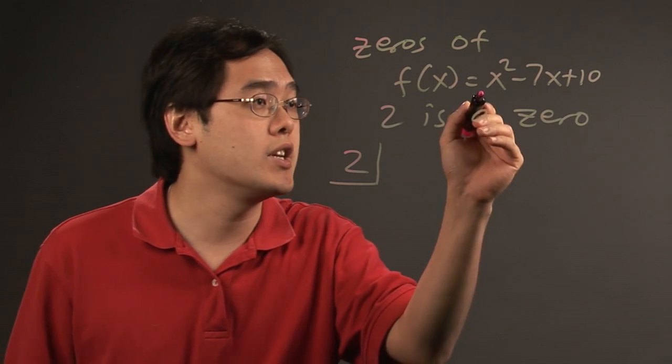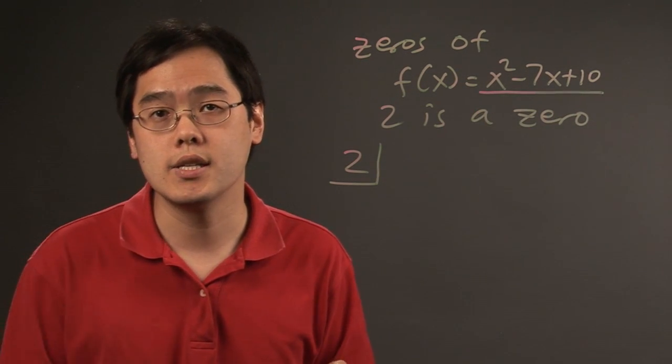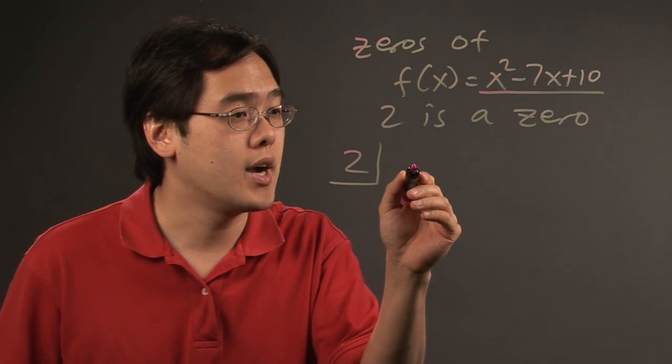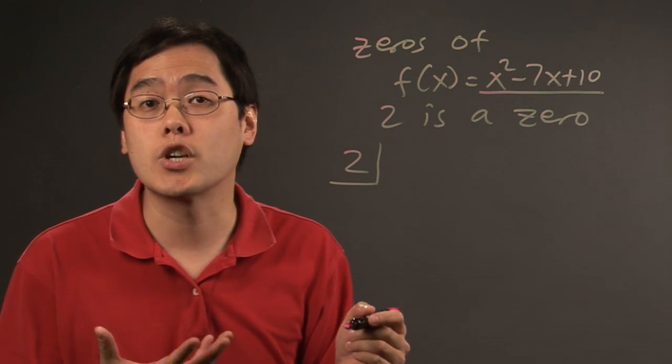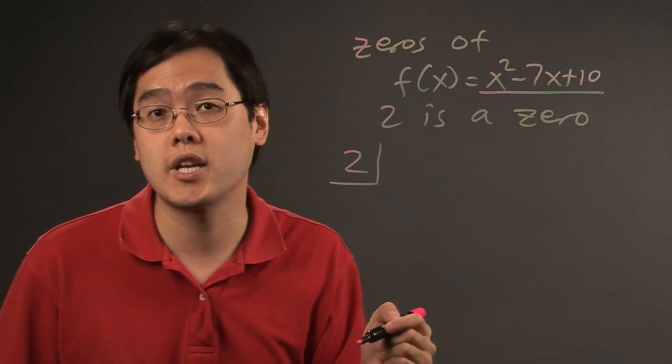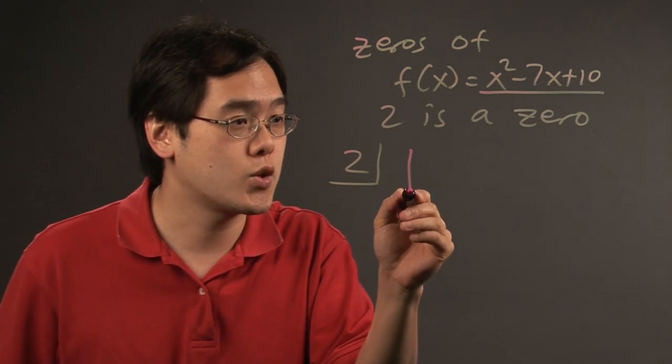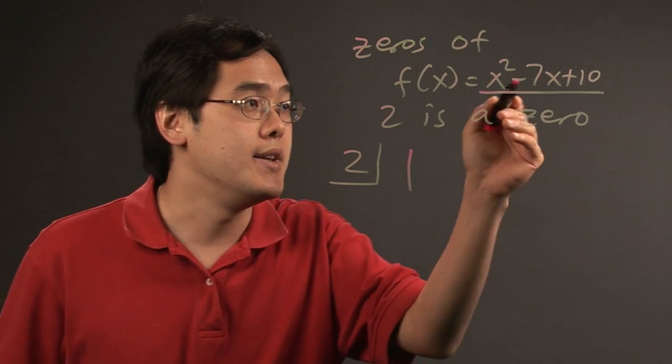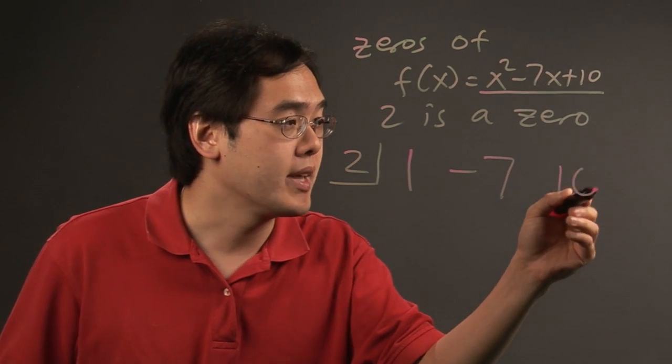How synthetic division works is you're going to take this polynomial and line up the coefficients in descending order. So you have 1x squared, you're going to have the number 1. Negative 7x, you write negative 7, and the constant is 10.